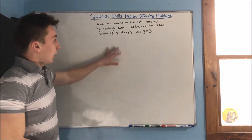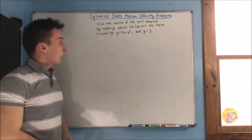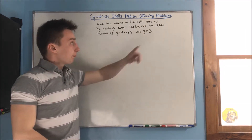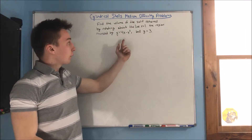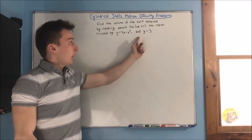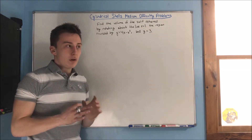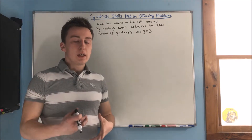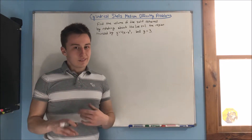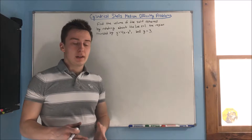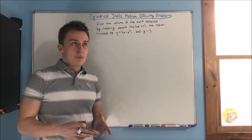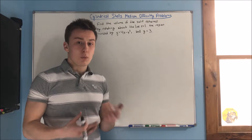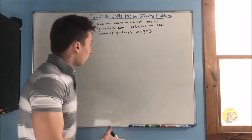Our next problem: find the volume of the solid obtained by rotating about the line x equals 1, the region bounded by y equals 4x minus x squared and y equals 3. The hardest part about this problem, honestly, is just graphing it, because most calc 2 classes are not going to allow you to use your graphing calculator. So you've got to figure out what your bounds are going to be and where your region even is.